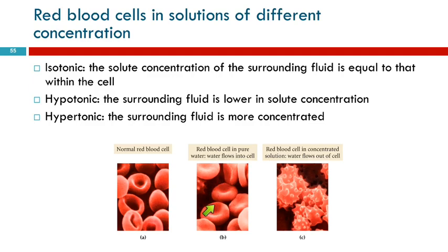If you put the red blood cells in pure water, the concentration inside is now greater than outside, so water is going to flow into the more concentrated solution and cause the red blood cells to swell up. If that continues, they will burst — you don't want that happening inside your veins. If you put a red blood cell into a solution that's more concentrated, like seawater with a high salt concentration, that will cause water to come out of the red blood cell and cause it to shrivel up and get all spiky. That's not good either.